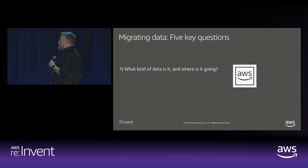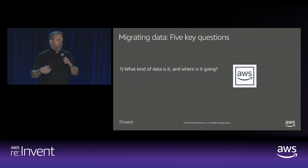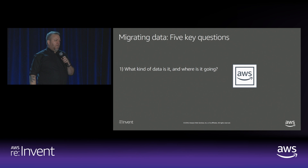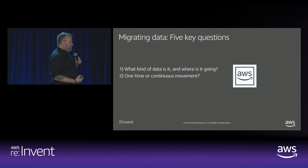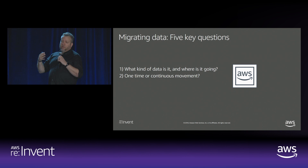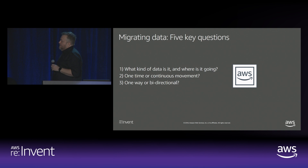First: what is it and where is it going? It seems simple, but I have a lot of conversations that start with 'we've got a petabyte and a half of data and we want to put it into the cloud.' Well, what's it on? We've got nine different arrays. What's the application? There are like 200 applications. How's the data broken up? Each application has its own data on a different array. That's not a good place to start — you're starting with chaos. So understand what kind of data it is, where it's going, and is it a one-time migration or continuous?